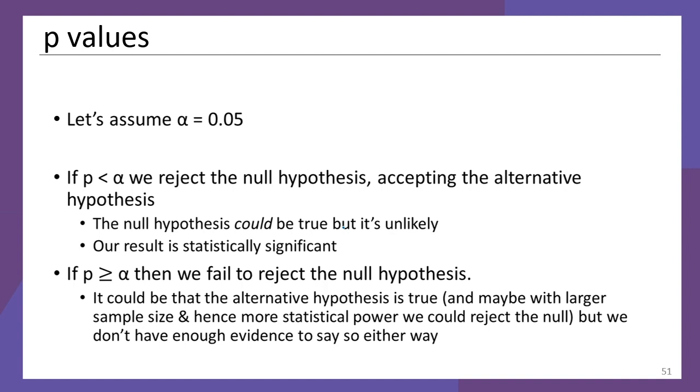If our p-value is not less than alpha, so we've got some bigger number, then we fail to reject the null hypothesis. And that language there is a bit careful because we're not necessarily saying that the null hypothesis is true. We're saying, well, we can't be confident enough to say it's not. So maybe it is true, maybe it isn't, but we don't have enough confidence to say that there is a relationship—we're basically just like maybe. So depending on your results here, you might go, well, maybe with a larger sample size and then having more statistical power, maybe we would be able to reject the null hypothesis and say there is a relationship. But at the moment, we don't have enough evidence either way.